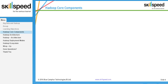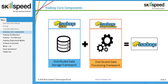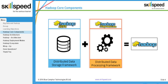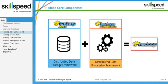Looking at Hadoop from an architectural point of view, there are two major parts. First is HDFS, the Hadoop Distributed File System, which is primarily responsible for storing data. The second part is MapReduce, which is responsible for processing the data. In a nutshell, Hadoop equals storage plus processing.